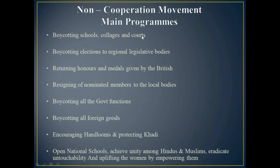The main programs of the Non-Cooperation Movement were: boycotting schools, colleges, and courts; boycotting elections to regional legislative bodies; returning honors and medals given by the British; resignation of nominated members from local bodies; boycotting all government functions and all foreign goods; encouraging handlooms and protecting Khadi; opening national schools; achieving unity among Hindus and Muslims; eradicating untouchability; and empowering women. These were the main programs — a very important long-answer question.